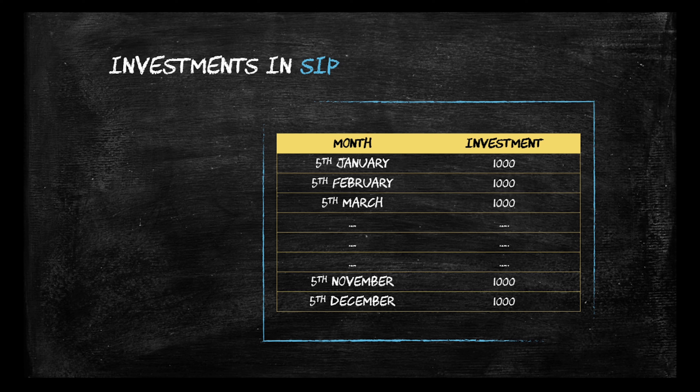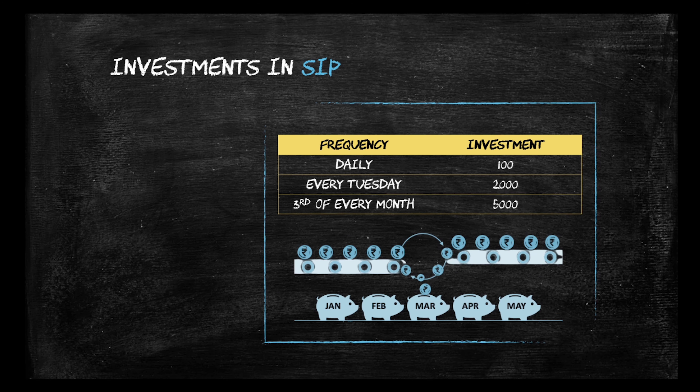Broadly, it's a very simple concept of putting money in on a recurring basis. When you are investing via mutual funds, you can choose a daily, weekly, monthly, quarterly, or semi-annual investment frequency, depending on what features the mutual fund offers. This is similar to how you would invest in a recurring deposit in a bank or post office.